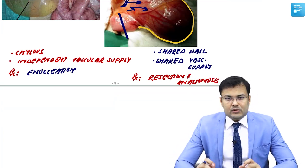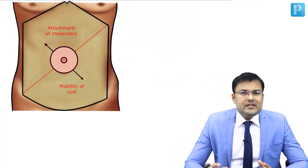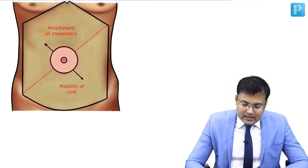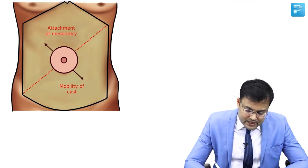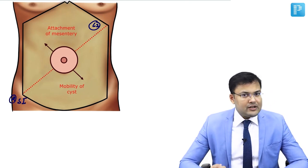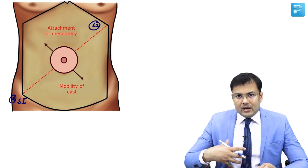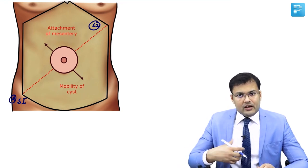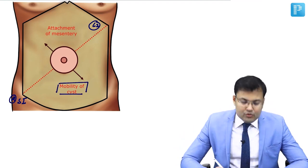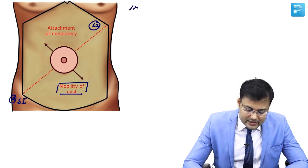Now see the questions related to anatomy and signs and symptoms. Mesentery is a fan-shaped structure via which the bowel is hanged from the posterior abdominal wall. The extent of mesentery: on the left side it starts from the left side of L2 vertebra and goes to the right sacroiliac joint. This is the line of attachment of mesentery. A swelling in relation to mesentery will be moving perpendicular to the attachment of mesentery.